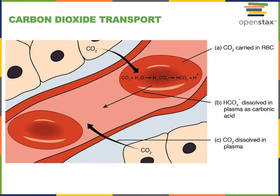Carbon dioxide is transported in the blood in several ways. Around 7% of the carbon dioxide transported in the blood is simply dissolved in the plasma. Carbon dioxide can also diffuse into erythrocytes, and within the erythrocyte it can bind to hemoglobin — around 23% of the carbon dioxide transported in the blood is bound to hemoglobin.